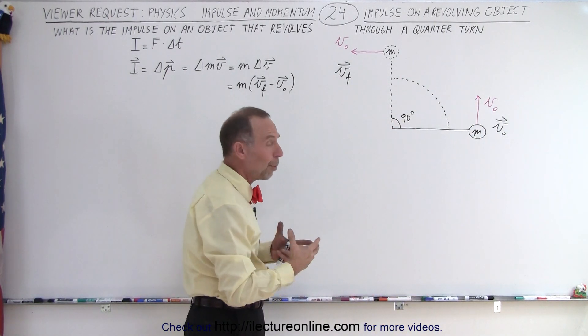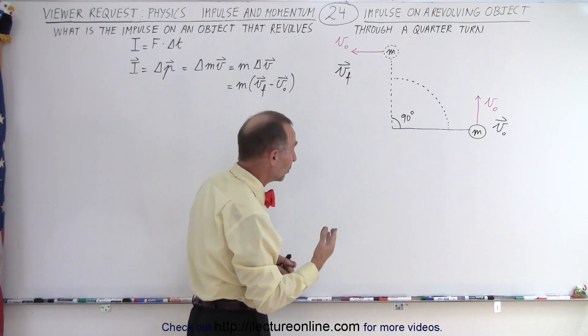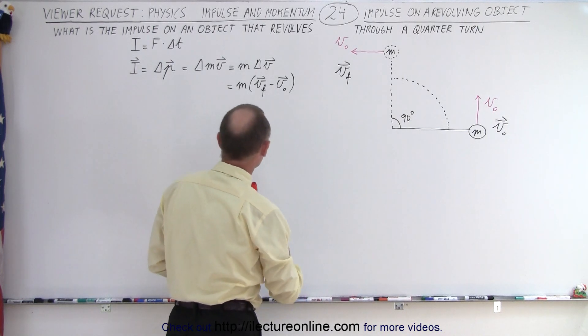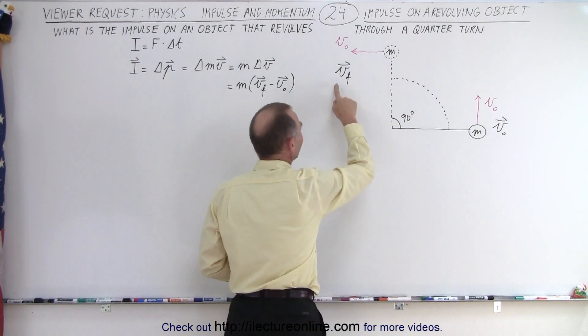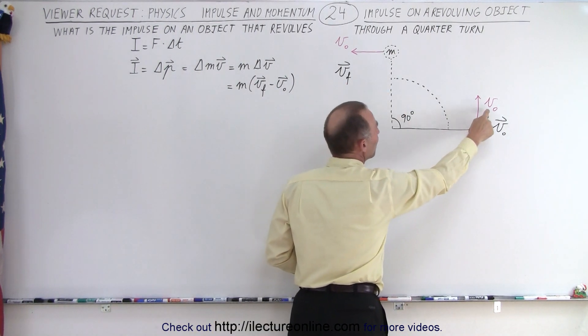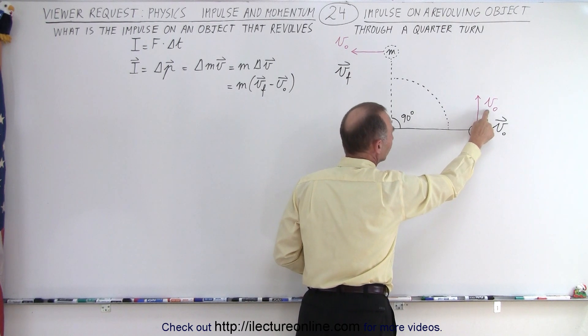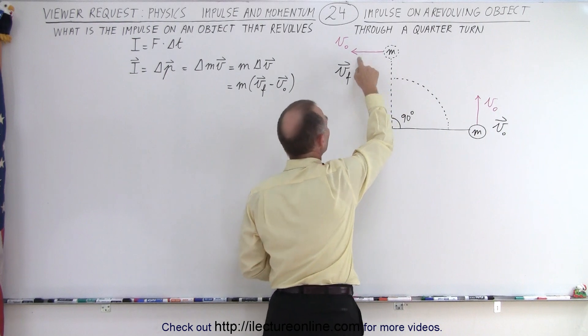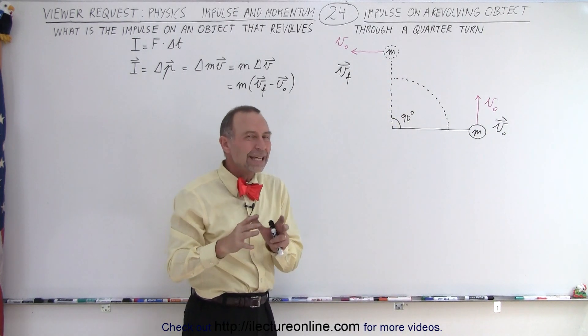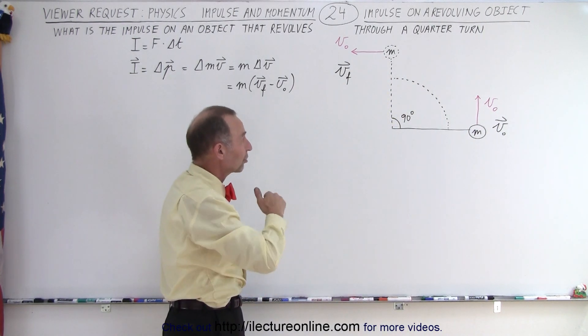So, how do we define the momentum, the change in momentum? How do we define the impulse? Well, let's go ahead and find the initial velocity and the final velocity. Notice that this is the magnitude of the velocity, and that doesn't change. So the magnitude of the initial velocity is still v sub nought, and that's still v sub nought over here. The speed doesn't change, just the direction changes.